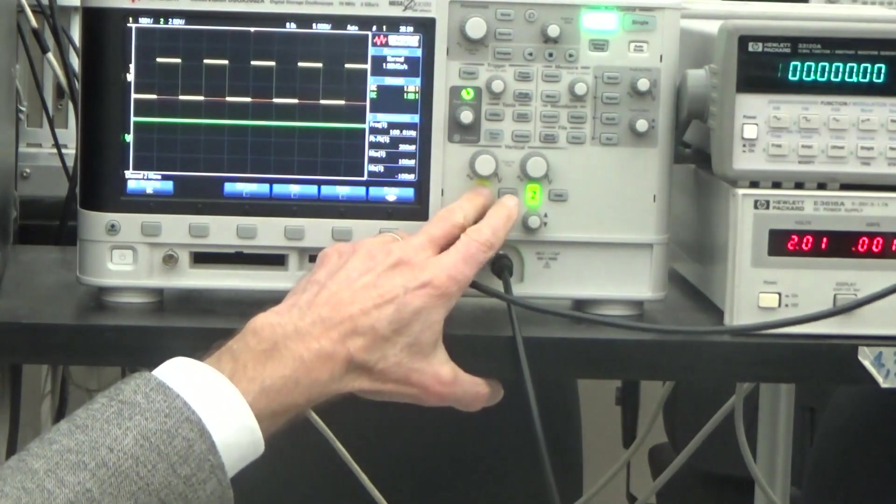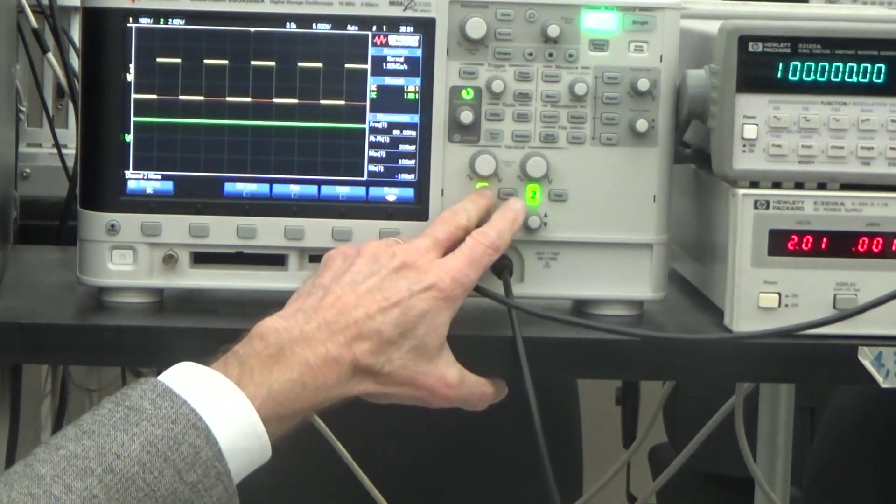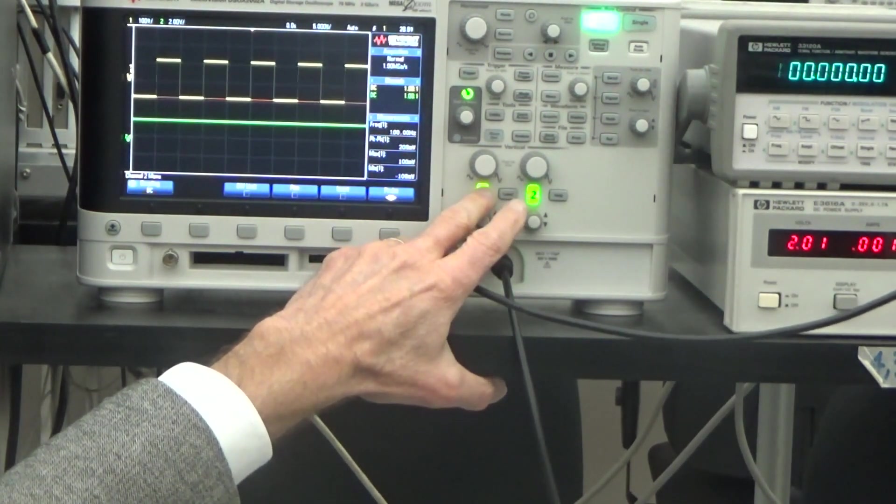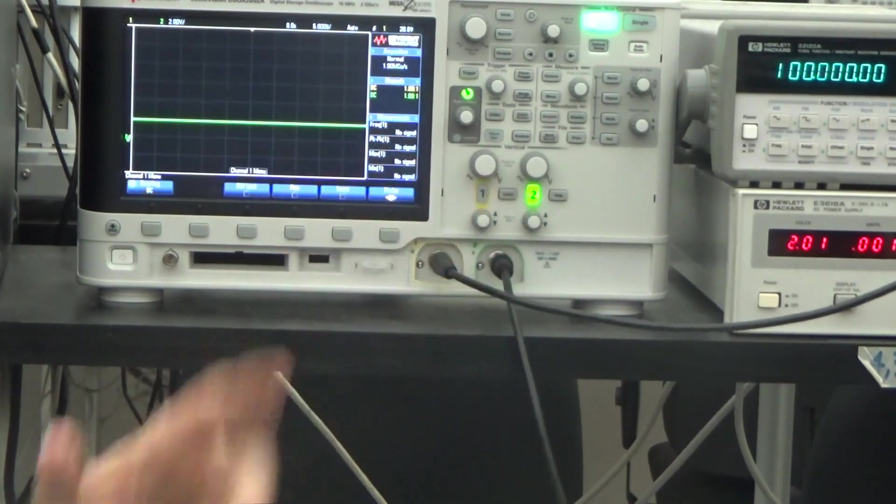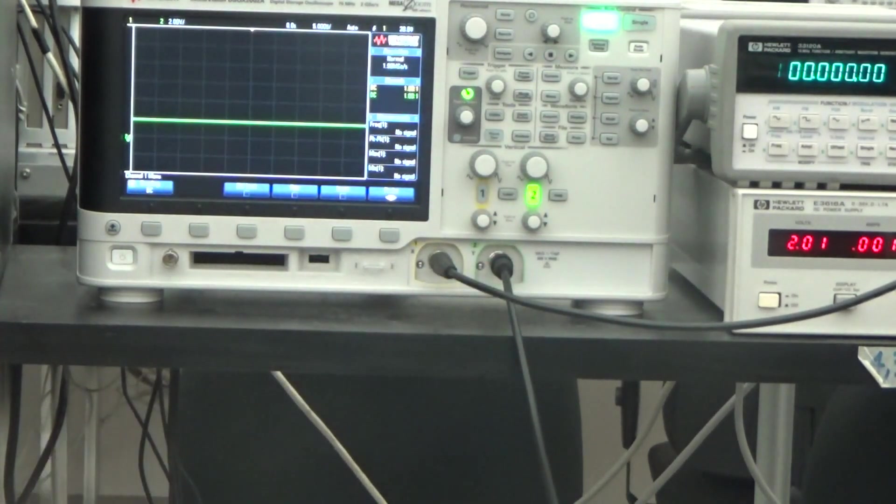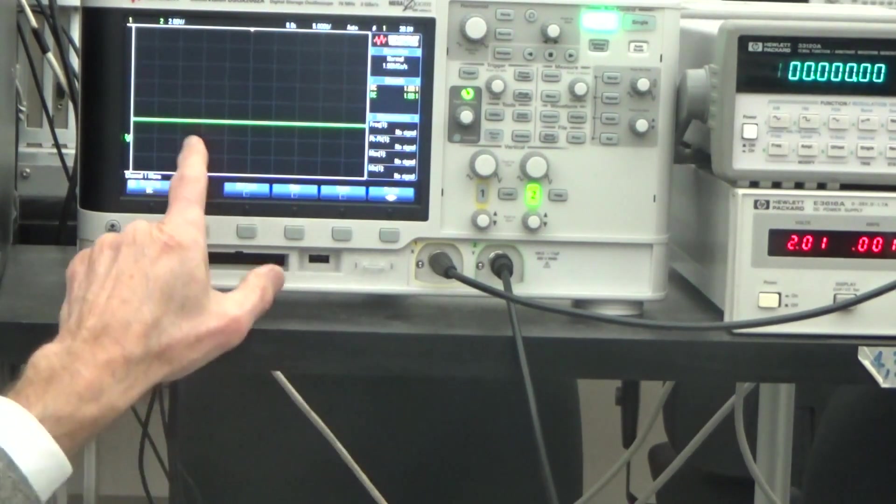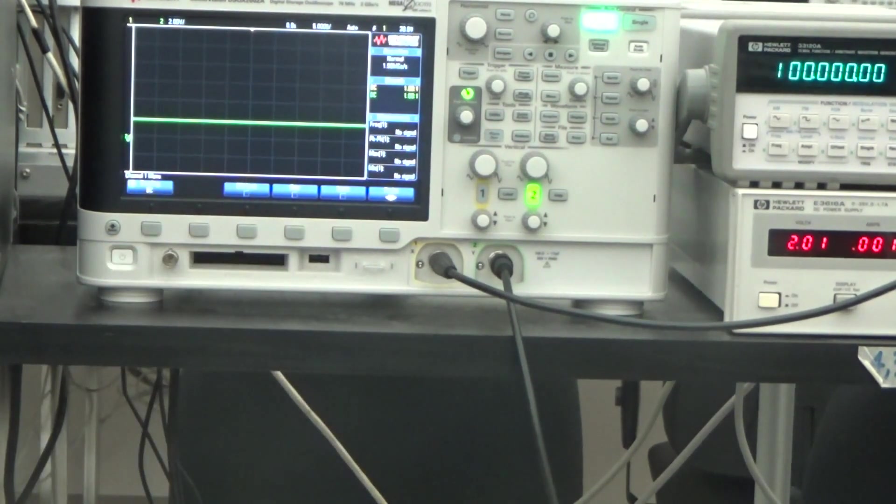So what I want to do first is just to turn off channel 1 which is the function generator and take a look at the power supply. So now we look at this and we say well, nice flat line. But if we were to make it much more sensitive we would see that there is not really a flat line.